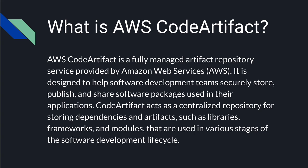This speeds up the overall download of packages. That's why Code Artifact acts like a centralized repository for storing dependencies and artifacts such as libraries, frameworks, and modules. These are used in various stages of the software development lifecycle, and Code Artifact is one of the solutions — other solutions would be like the Nexus repository. AWS Code Artifact is provided by Amazon Web Services, and it is highly integrated with other services, so you can leverage IAM for permission control.